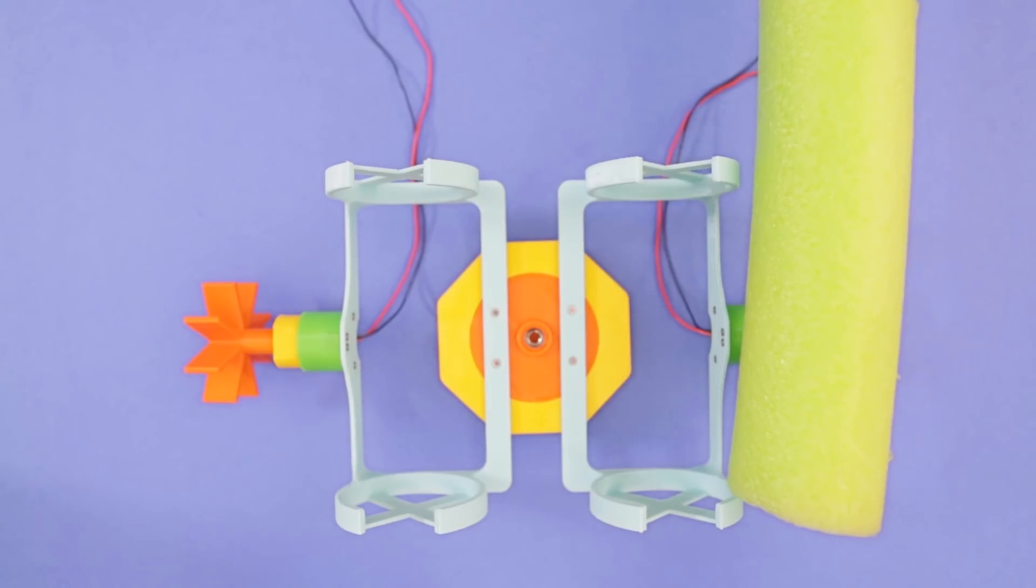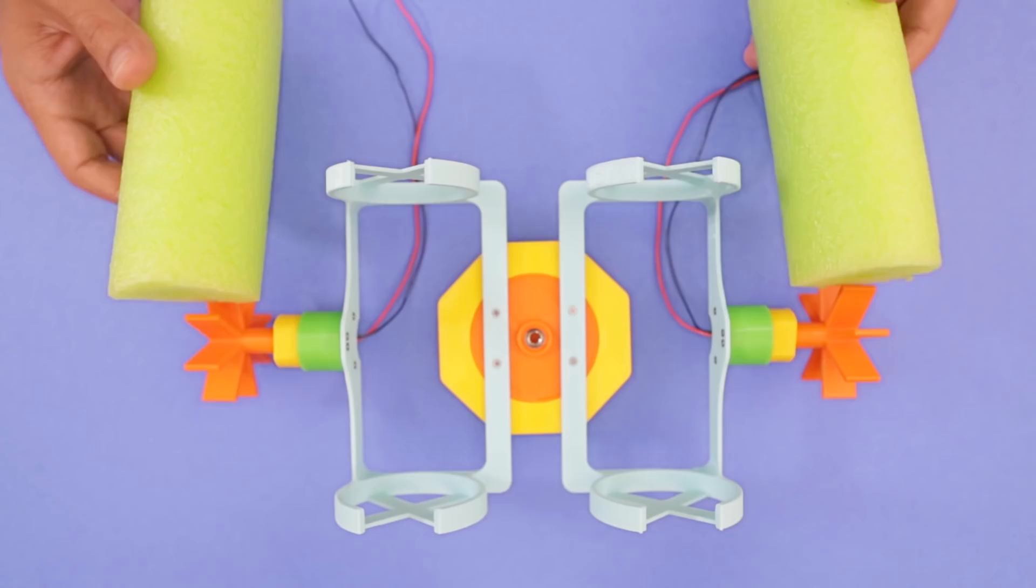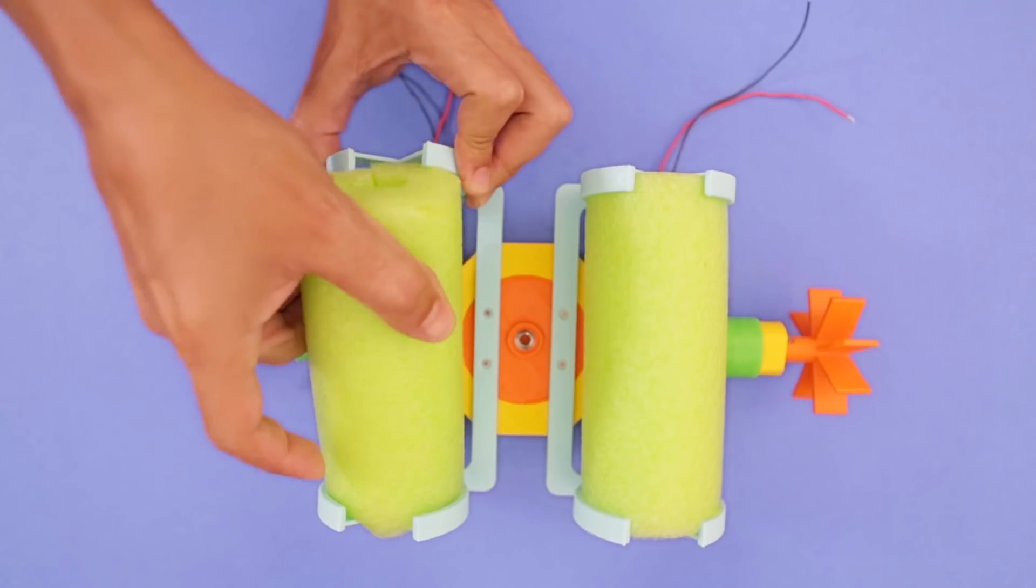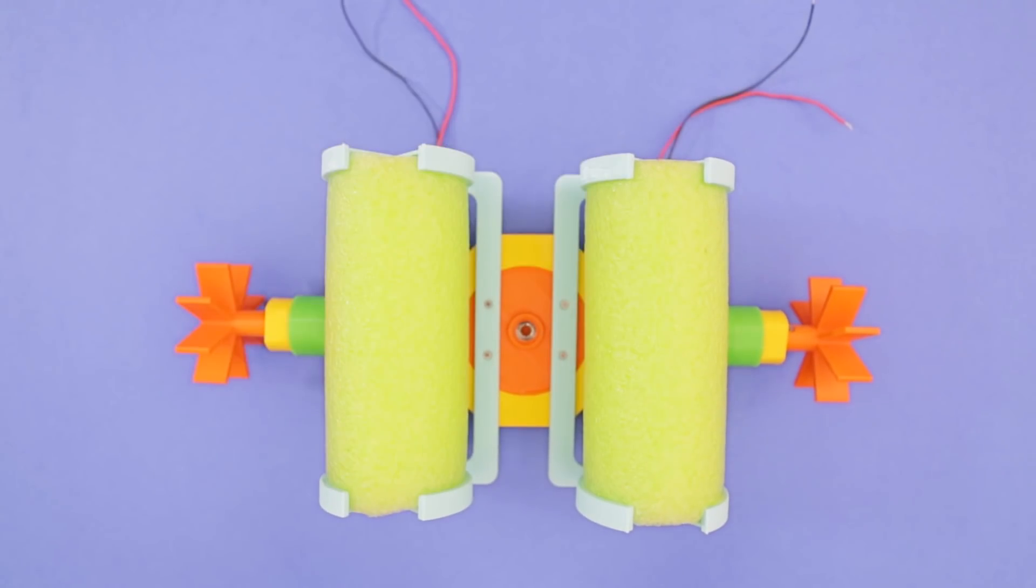To create our flotation device, we can measure and cut pieces from a pool noodle which we picked up from our local dollar store. These are press fitted into the retainers.